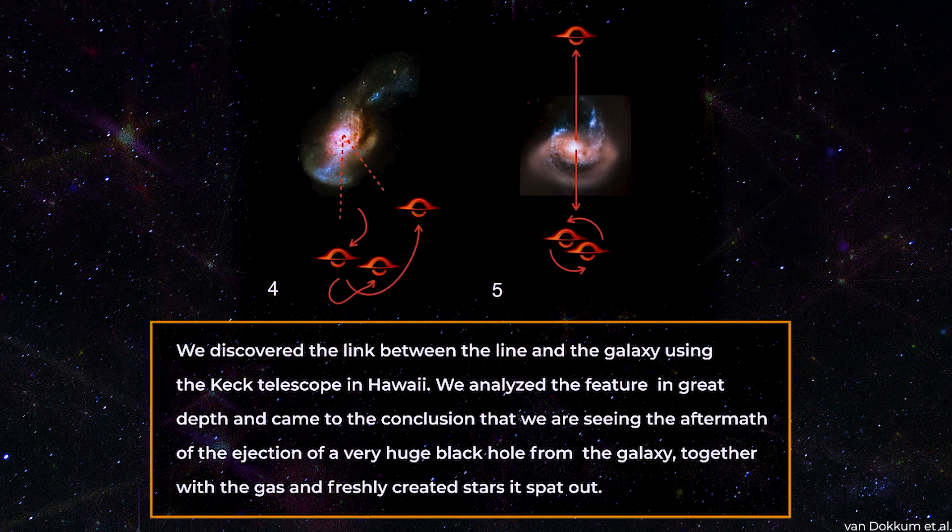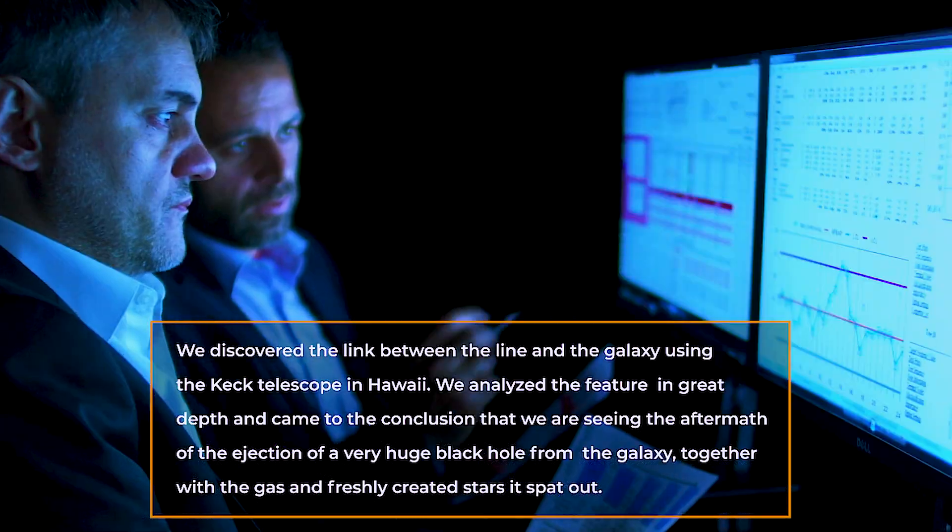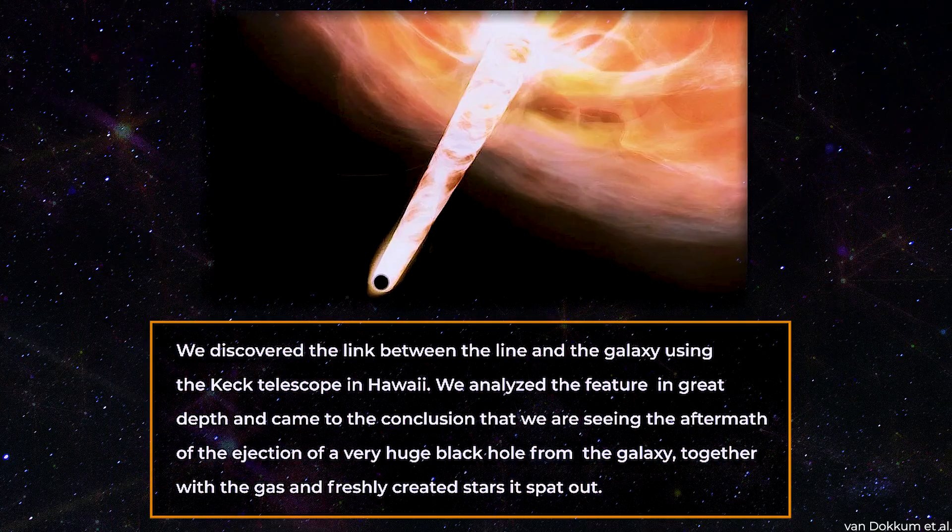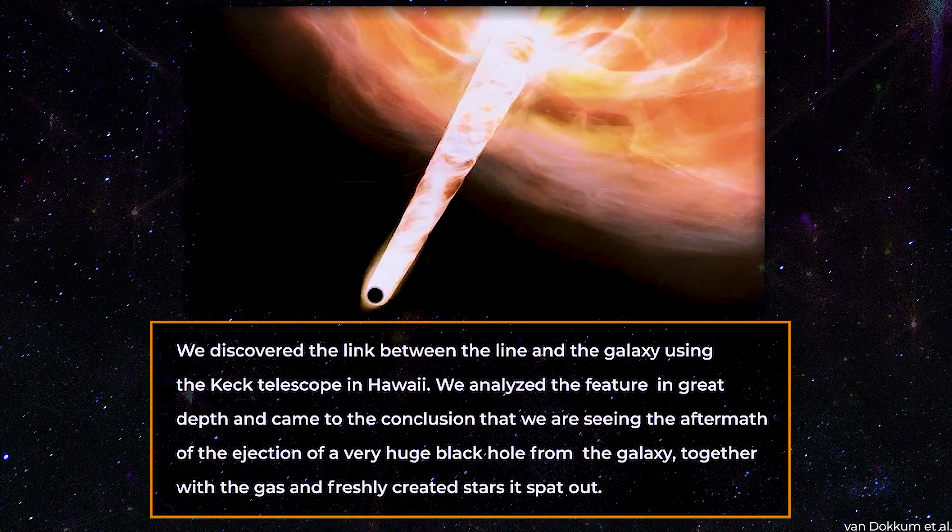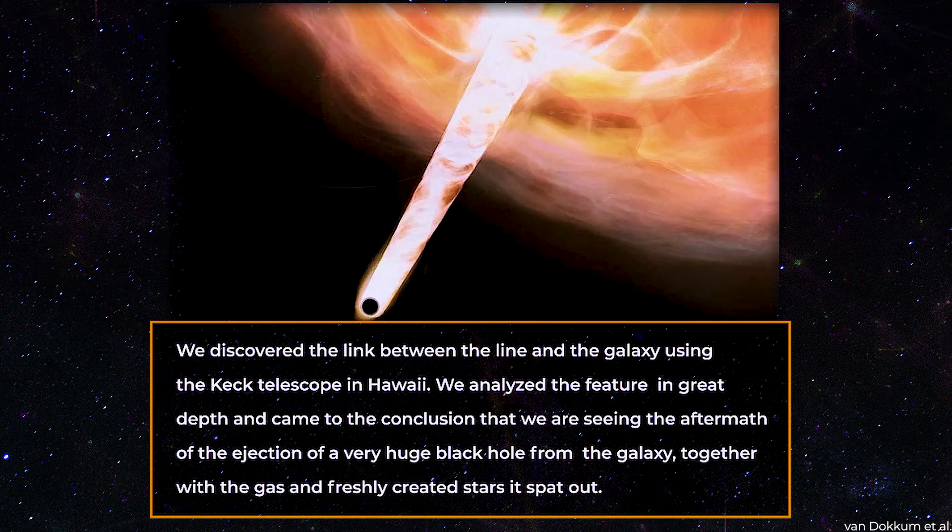We discovered the link between the line and the galaxy using the Keck telescope in Hawaii. We analyzed the feature in great depth and came to the conclusion that we are seeing the aftermath of an ejection of a very huge black hole from the galaxy, together with the gas and freshly created stars it spat out.